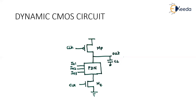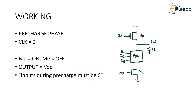As discussed in the previous video, the output voltage will be temporarily stored in the capacitor for a particular hold period. This is the circuit of dynamic CMOS, and now we will look at how it works.